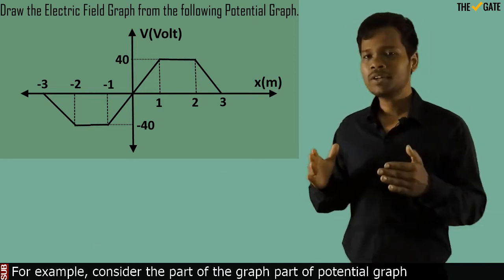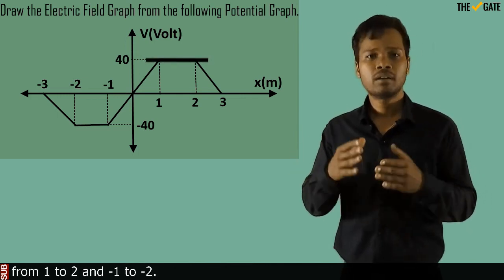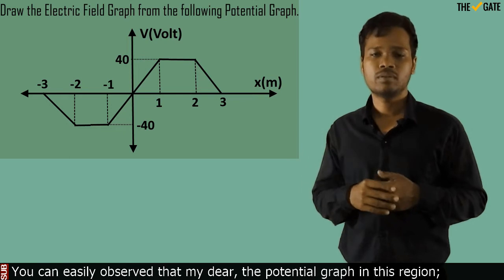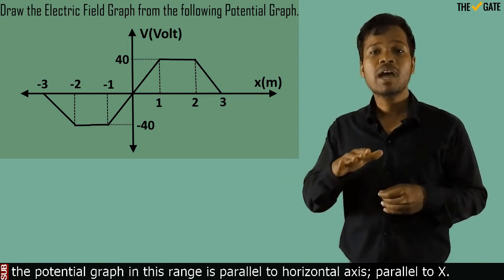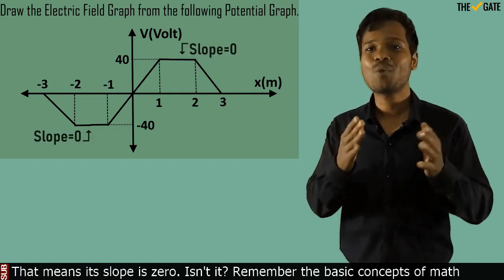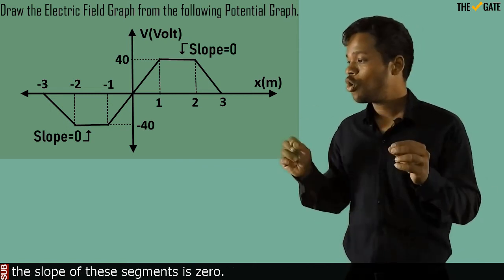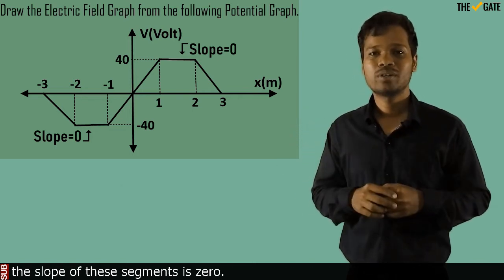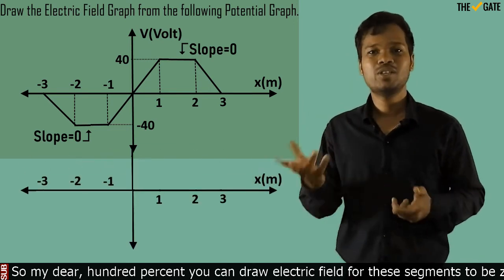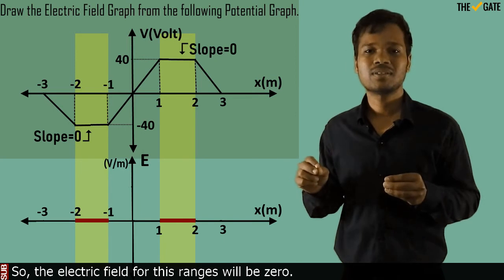For example, consider the part of the potential graph from x = 1 to 2 and x = -1 to -2. You can easily observe that the potential graph in this region is parallel to the horizontal axis, parallel to x. That means its slope is 0. Remember the basic concepts of math — the slope of these segments is 0. So, you can draw the electric field for these segments to be 0, because the electric field is the negative of the slope. The electric field for these ranges will be 0.